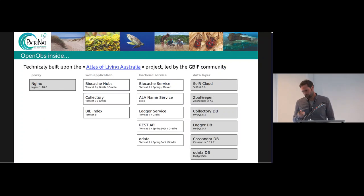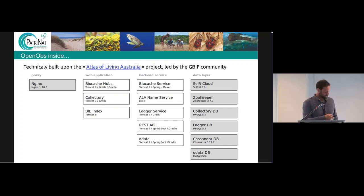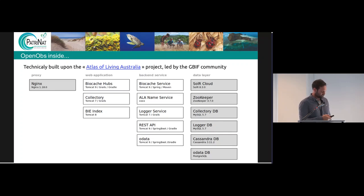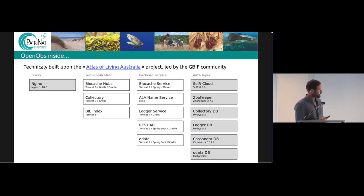Technically, OpenObs is built upon the Atlas of Living Australia project. Here are all the modules we use — the gray boxes are not developed by the ALA or by us. We have three web applications: the Biocache Hub, the Collectory, and BIE Index. For backend services, we have five: the Biocache Service, the ALA Name Service, Logger Service, a REST API developed by us, and OData. Then we have the data layer, which is not developed specifically by us.